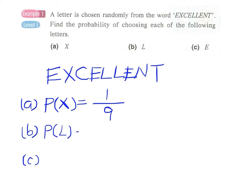Getting L—this is quite similar. Again, the denominator is nine. For L, we can find one, two—two L's. So this will be two over nine. Part C: getting the letter E.